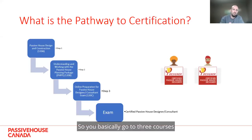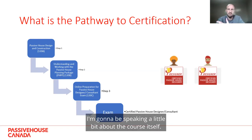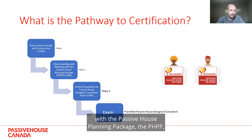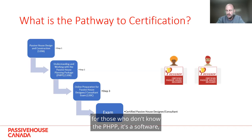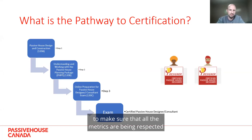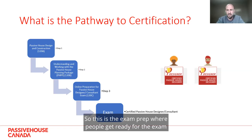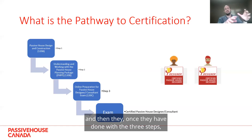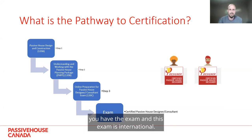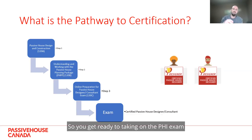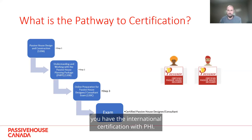How does the pathway work? You go through three courses. The first is Passive House Design and Construction — the 128A. The second step is Understanding and Working with the Passive House Planning Package, the PHPP. For those who don't know, the PHPP is an Excel-based software where you do all the energy modeling for Passive House before construction starts to make sure all the metrics are respected and you will actually achieve the Passive House standard. The third is the online preparation for the Passive House Designer/Consultant exam. Once done with the three steps, you take the exam — and this exam is international. You get ready for the PHI exam, and once you pass, you have the international certification with PHI.